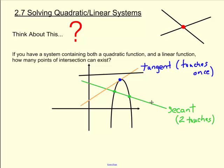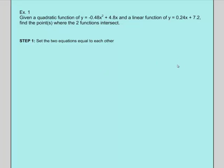Now let's see if we can use algebra to help us decide: given a quadratic equation and a linear equation, can we figure out if they have two points of intersection (secant), one point of intersection (tangent), or no solutions at all? Let's look at an example. Given a quadratic function y = −0.48x² + 4.8x and a linear function y = 0.24x + 7.2, find the point or points where the two functions intersect.